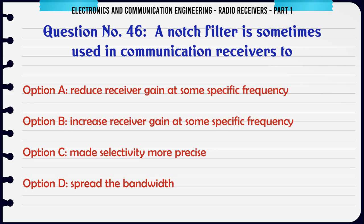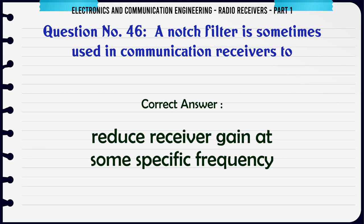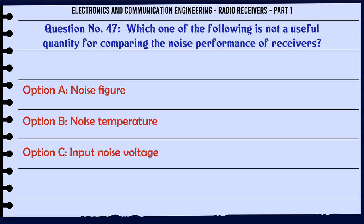A notch filter is sometimes used in communication receivers to: A. Reduce receiver gain at some specific frequency. B. Increase receiver gain at some specific frequency. C. Make selectivity more precise. D. Spread the bandwidth. The correct answer is reduce receiver gain at some specific frequency.